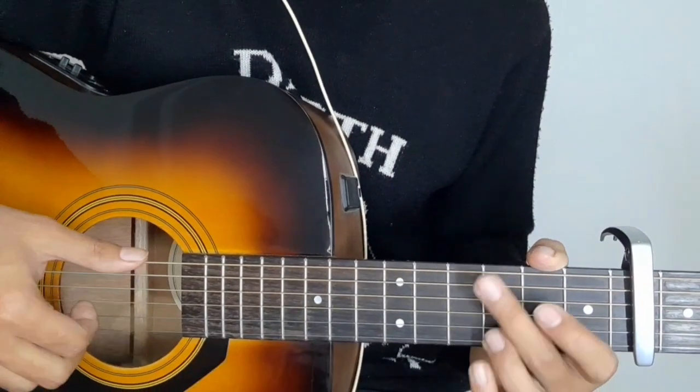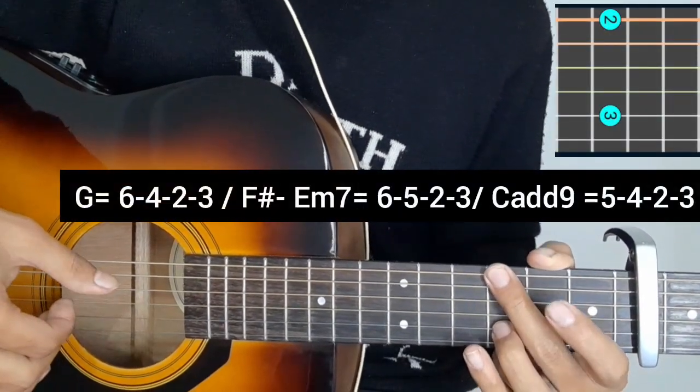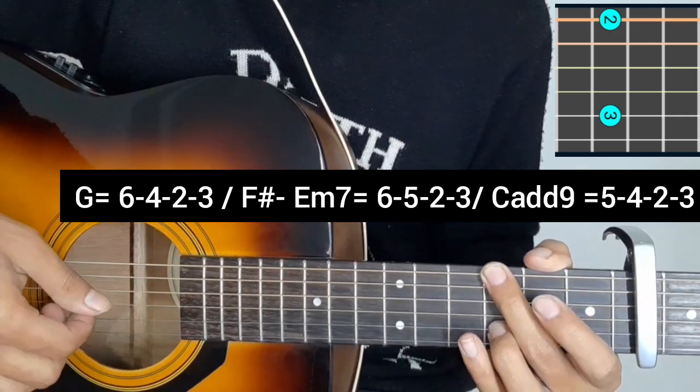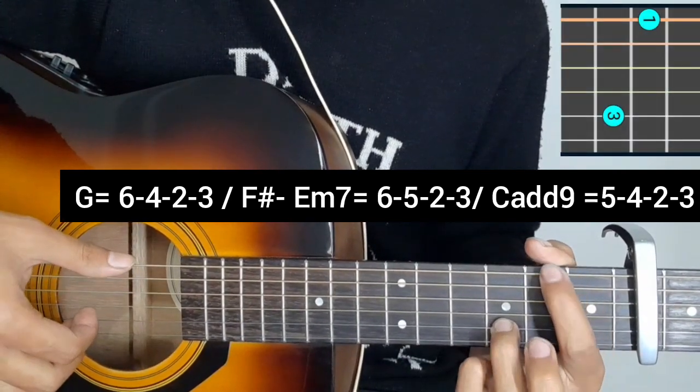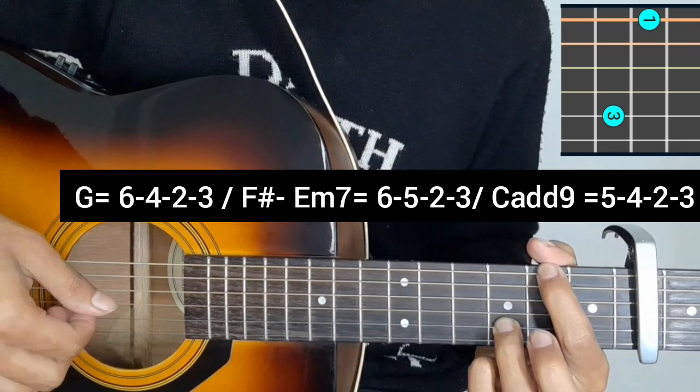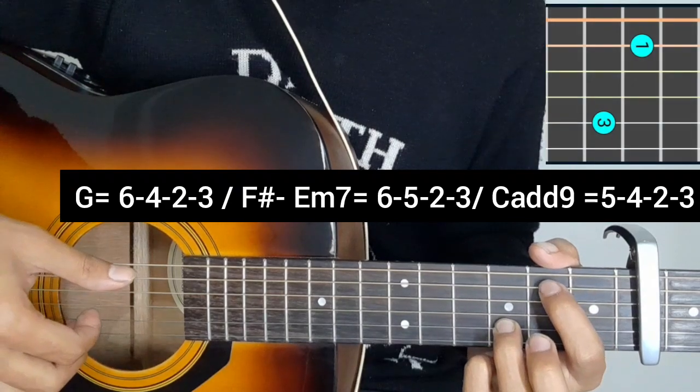So it's a simple pattern in G major. The plucking pattern is 6-4-2-3. The plucking is 6-4-2-3. Start on the G chord at the 3rd fret on the 8th string.